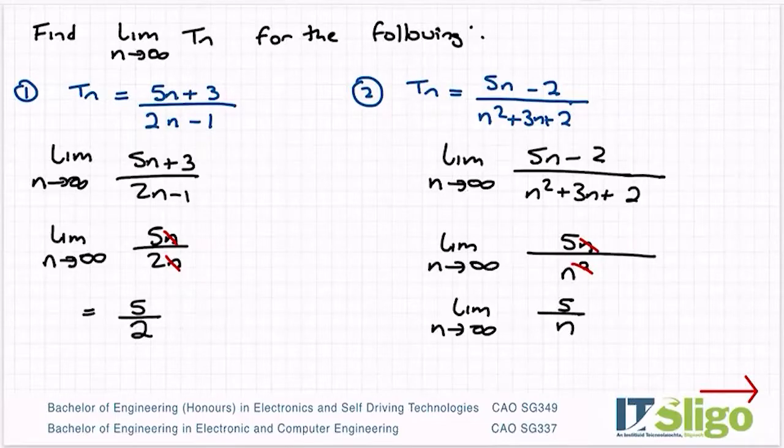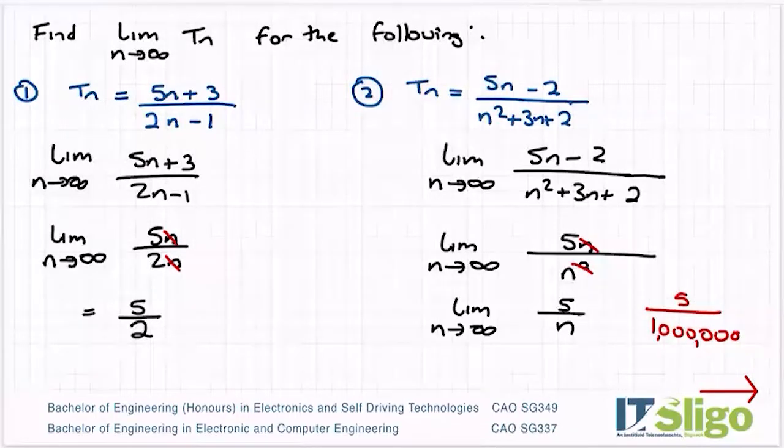So back in the day when I was doing these, what I would put into my calculator is something like 5 over a million, just to see what would happen. And you can see then you get this number 1 over 2,000 or 5 by 10 to the minus 6, which is a tiny number.